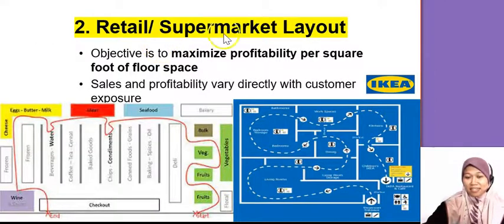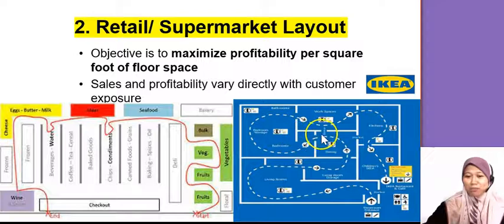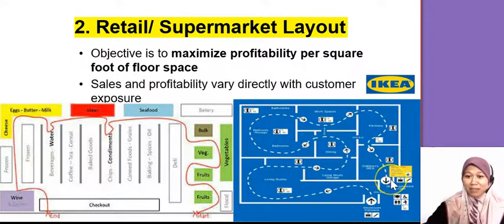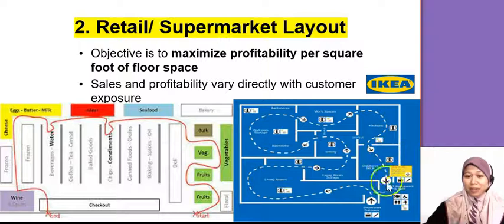These are the retail or supermarket layout. It's very interesting in which they try to maximize the profit per square foot — making sure all customers who come in will spend lots of time here so they get more income and more profit. For example, IKEA — you want to go to the restaurant, but you go through all the showroom first, and at the end you end up buying banyak-banyak benda. It's very rare to see one person going to the IKEA showroom and ending up with one item or nothing at all — mesti terbeli something.